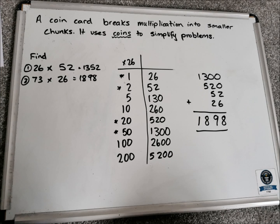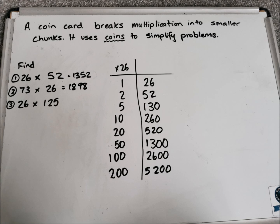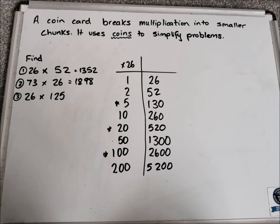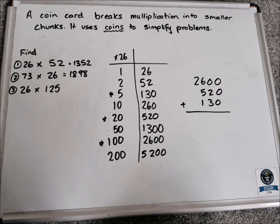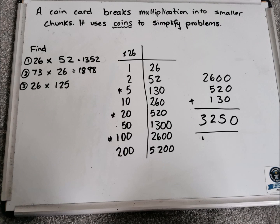Last but not least, we might have a three digit multiplied by a two digit, so 26 multiplied by 125. This time we need to work out how to make 125. So I'm going to use 100, 20, and 5. Adding up 2,600, 520, and 130, and taking my time, I got 3,250. And that is the answer to the multiplication problem.